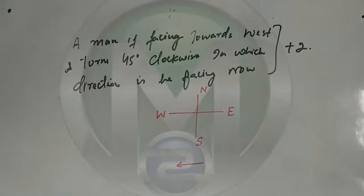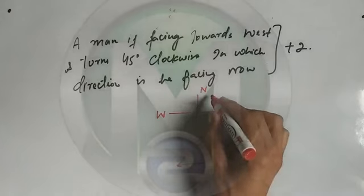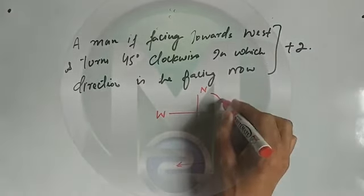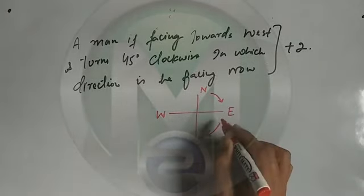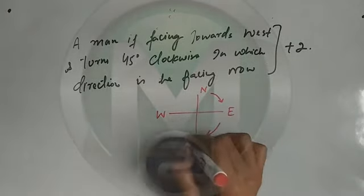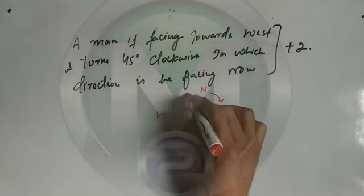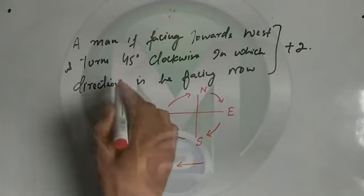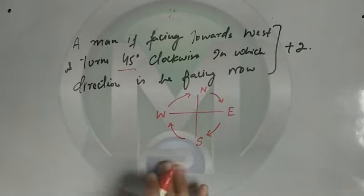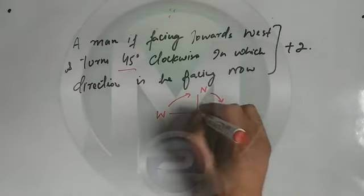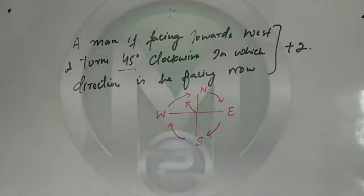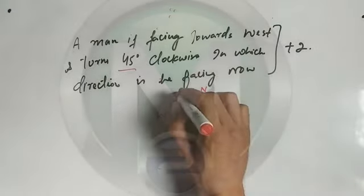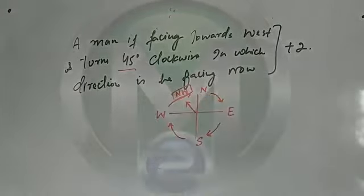Now he takes a clockwise rotation. In clockwise turns: North goes to East, East goes to South, South goes to West, and West goes to North. So from West, a clockwise turn goes toward North. But since it is only 45 degrees, the direction is halfway between West and North — that is North-West.